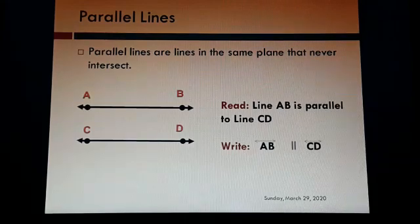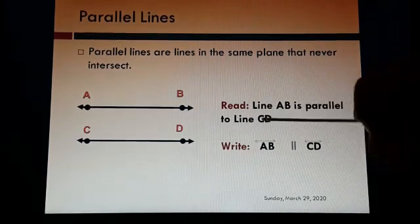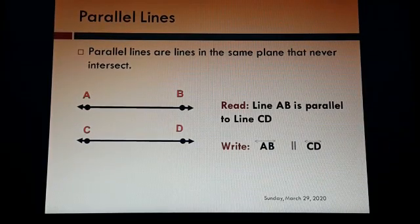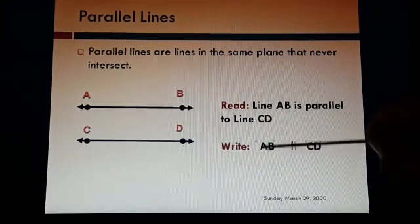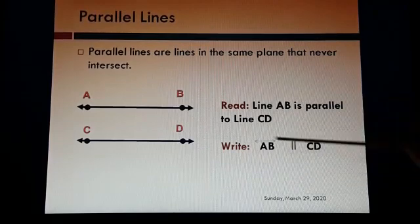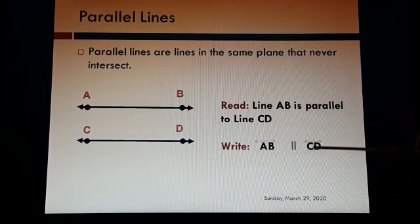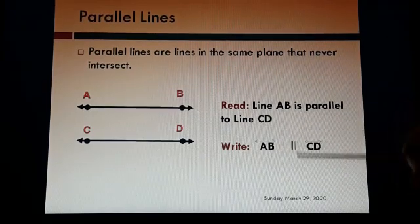So they are parallel lines. How to read: you will read it as line AB is parallel to line CD. How to write with the symbols — the symbol for parallel lines is two short parallel marks, and you can see them in the middle of both lines AB and CD. So you write: AB line symbol, parallel symbol, CD line symbol.